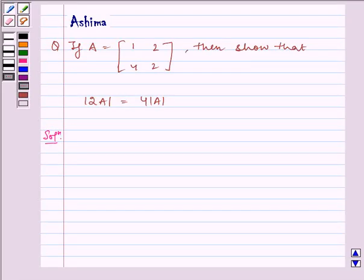Hello and welcome to the session. If A is equal to [[1, 2], [4, 2]], then show that |2A| is equal to 4 times determinant A.